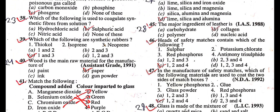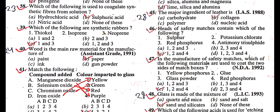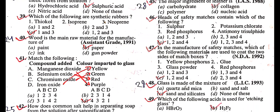Which of the following is used to coagulate synthetic fibers from solution? Answer is sulfuric acid. Question: Which of the following are synthetic rubbers? Answer is thiokol and neoprene. Isoprene is not a synthetic rubber.